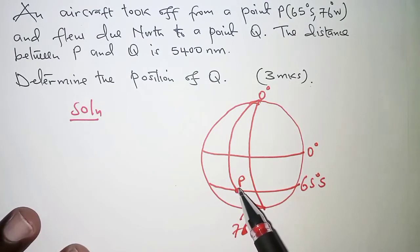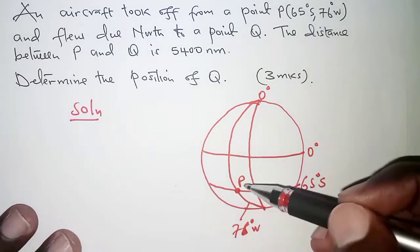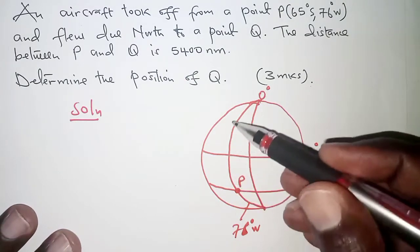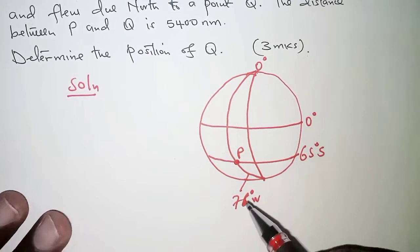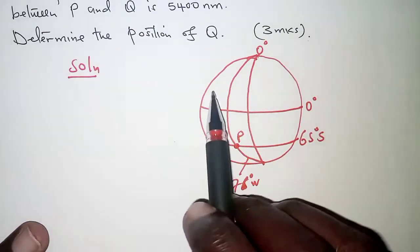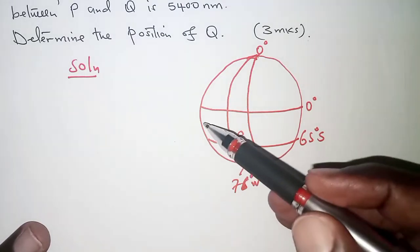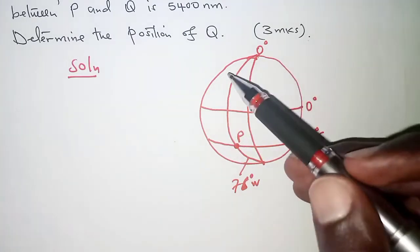Now from point P, an aircraft took off and flew due north. It moves due north. That means that it will move along parallel of the longitude 76 degrees west. And we don't know how many degrees it covered.